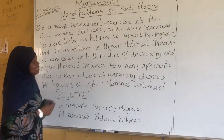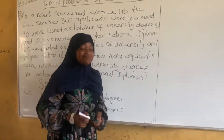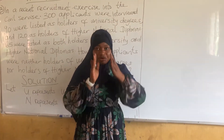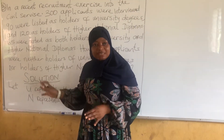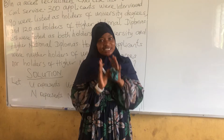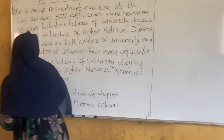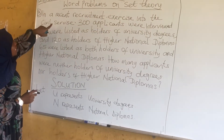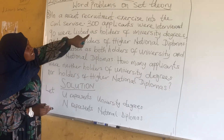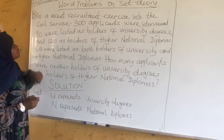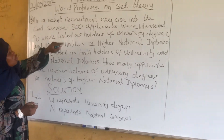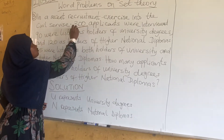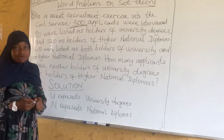Like I said in the last video, the first thing is that you have to understand the question very, very well. Read it, make sure you understand it. From here, we can see that in the recent recruitment exercise into the civil service, there were 300 applicants. That means the quantity of the universal set will be 300.